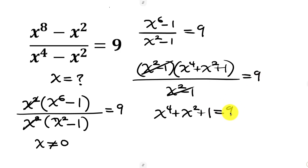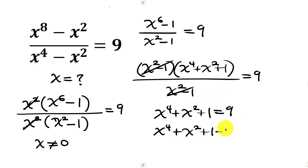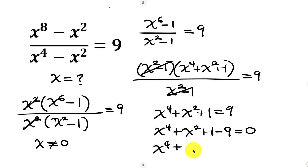Now we can move 9 to the left-hand side so that we have x to the power of 4 plus x squared plus 1, and as 9 crosses it becomes minus 9, equal to 0. Reducing our equation gives x to the power of 4 plus x squared, and 1 minus 9 is minus 8, equal to 0. Very good.